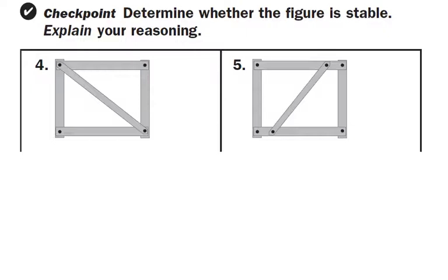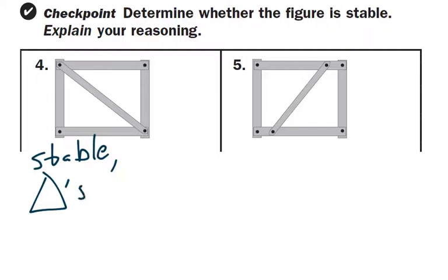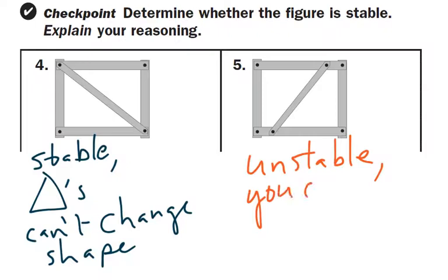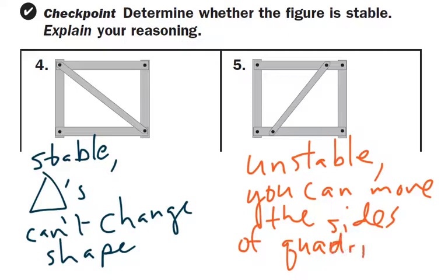For checkpoint four, the answer would be stable because you have triangles that can't change shape. For checkpoint five, it would be unstable because the other polygons — quadrilaterals — can move around their sides. You can move the sides of quadrilaterals.